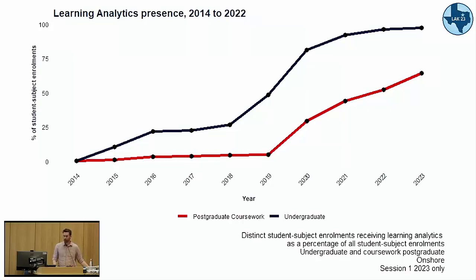This chart shows the uptake of those reports over time — blue for undergrad subjects, red for postgrad subjects — showing the percentage of student-subject enrollments that receive these learning analytics reports. We are now at 95% of undergrad subjects receiving these reports. The difference between undergrad and postgrad reflects our targeted approach of focusing more on large first-year undergrad subjects to help students in their transition into university.